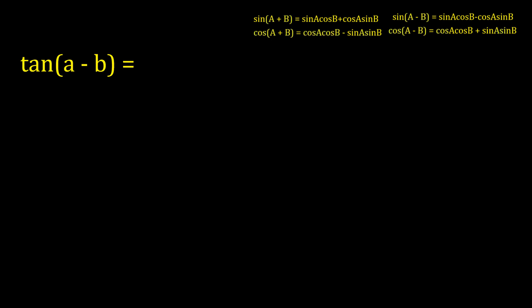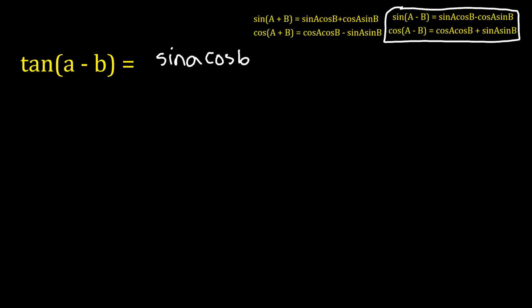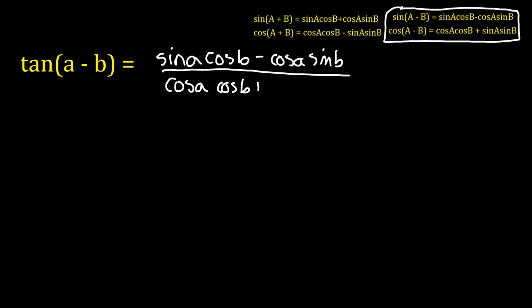Now let's do the same thing for tangent of a minus b. It's pretty much the same idea; this time we use the sine and cosine subtraction identities. This would be an excellent time for you to pause the video and see if you can work through the same process on your own. So tangent of a minus b is sine of a minus b over cosine of a minus b, which is sine a cosine b minus cosine a sine b over cosine a cosine b plus sine a sine b.